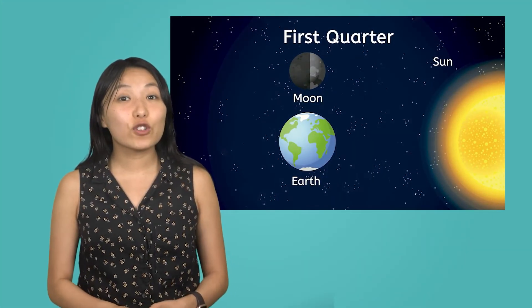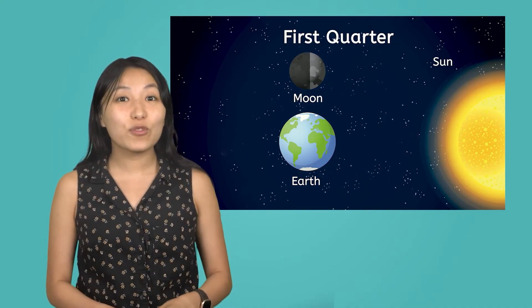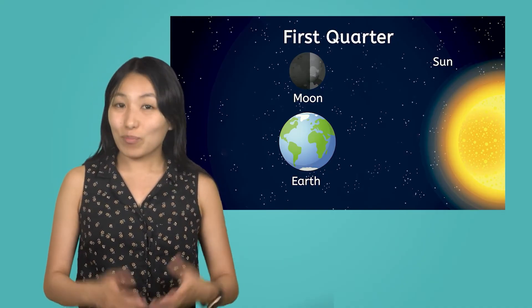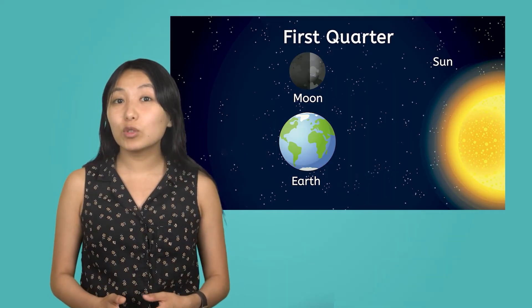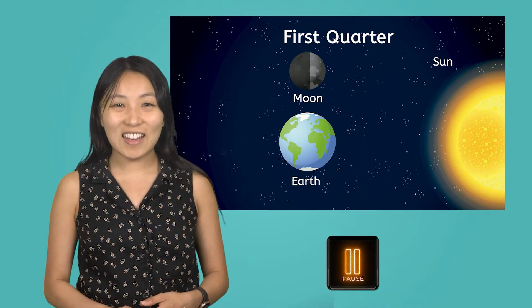Next is the first quarter phase, where the moon is one quarter of the way through its orbit around Earth. Based on the diagram, predict or draw which you think the moon will look like from Earth. Pause the video and record your thoughts in your guided notes.